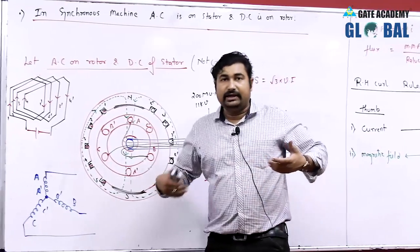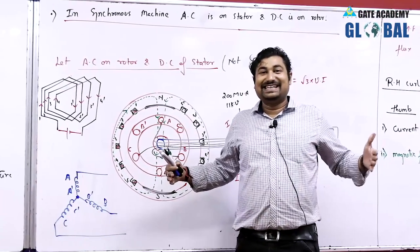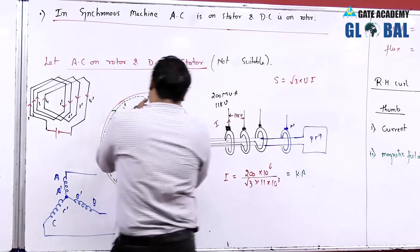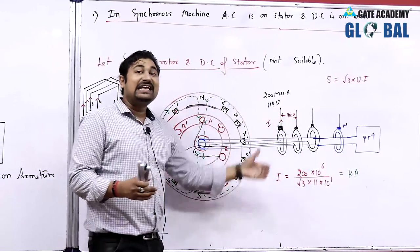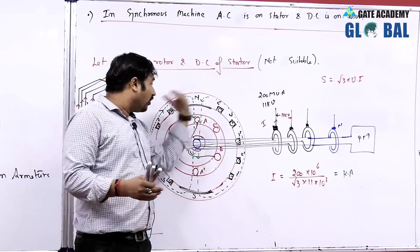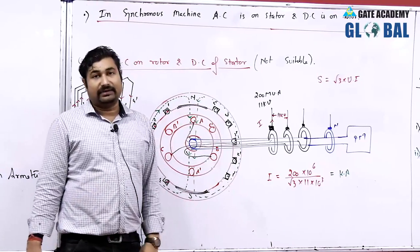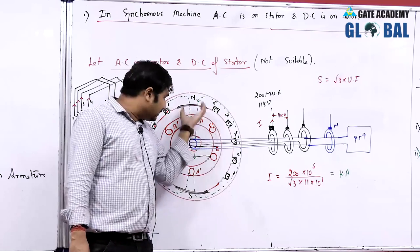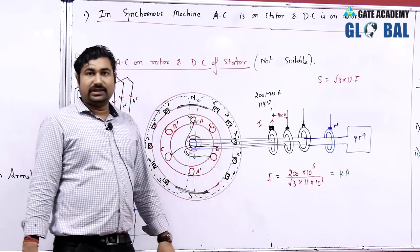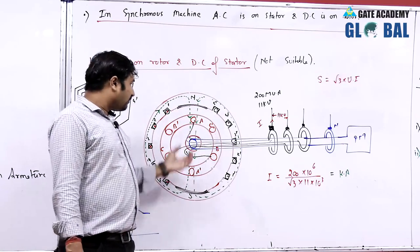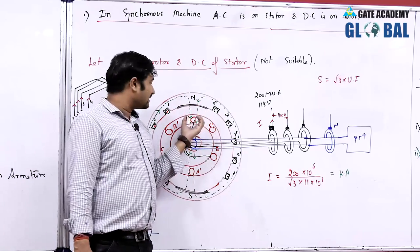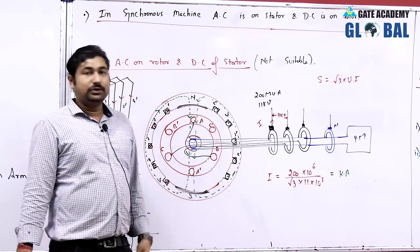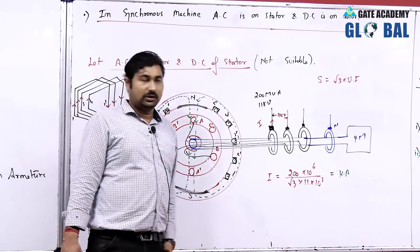If the current is in kilo-amperes, then the wire needed will be thicker than a person. If such a thick wire is rotated on the rotor, a very large centrifugal force acts on the wire and it becomes very difficult to hold that wire in the rotor body. This is the first problem: centrifugal force due to the large weight of the wire used in the rotor slots.